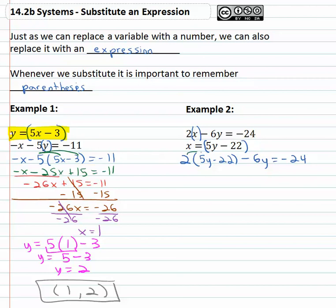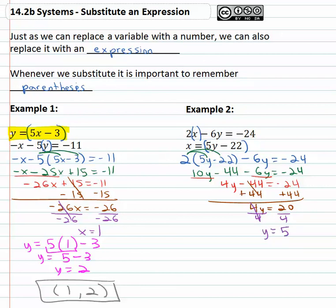And now we start solving, first by distributing to give us 10y - 44 - 6y = -24. Combining like terms, the y's: 10y - 6y is 4y - 44 = -24. It's a two-step equation, so we add 44 to both sides. This gives us 4y = 20, and finally divide both sides by 4 and we now know what y equals. Y is equal to 5.